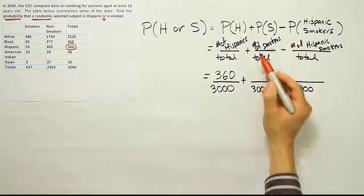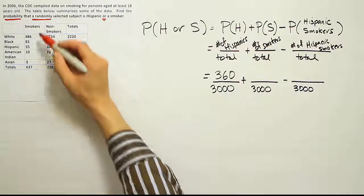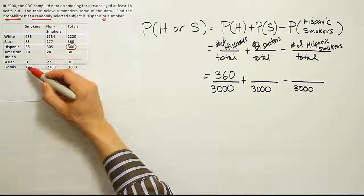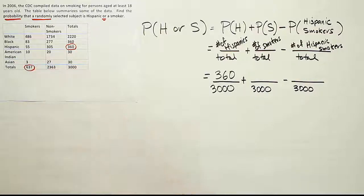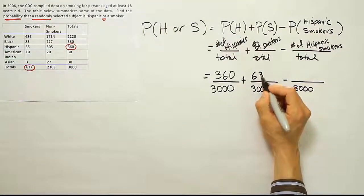Now let's try to identify the number of smokers in the problem. Well, here's the smoker column. The total is here. The total number of smokers is 637. So we'll put 637 there.